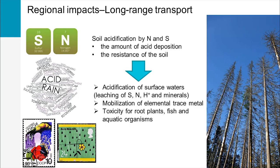Such damage included tree degradation. Fortunately, the chemical and biological recoveries of these lakes and forests, following a reduced deposition of sulfur, became evident 30 to 40 years later. However, acid rain caused by sulfur and nitrogen deposition still exists in sensitive ecosystems and their remediation takes time.